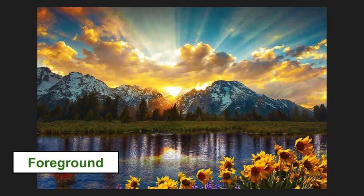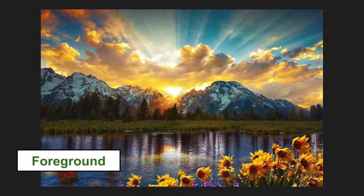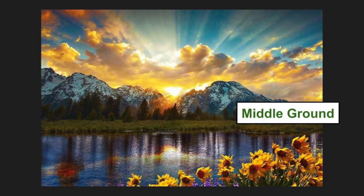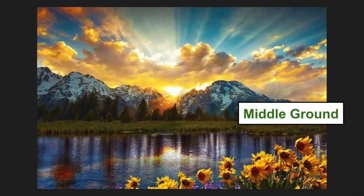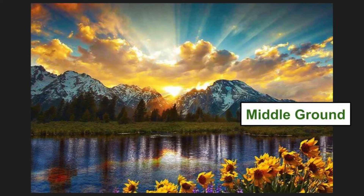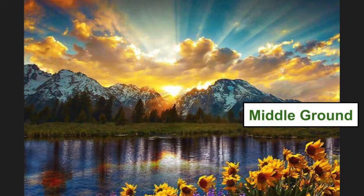Now, the middle ground could be a lot of different things. I would say that it is mostly the river and the grass and even back to the trees — kind of the whole middle section of the picture, which makes sense. It's a little bit further back, but it isn't the furthest into the distance, and it's usually where the horizon line is.